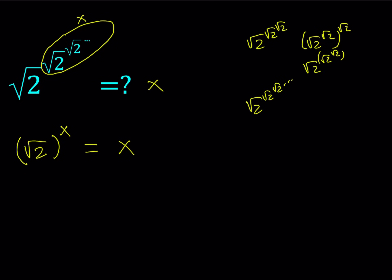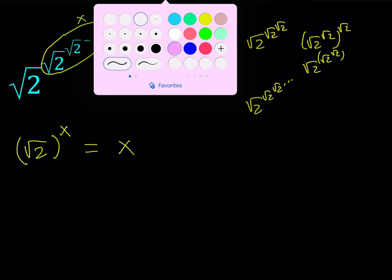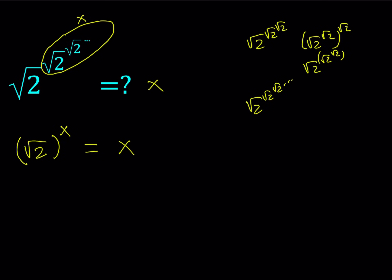Well, it's not that simple because x is in the exponent as well as in the result, so this is not a standard type of equation. One thing you can do is make a graph and see where the two sides meet. But let's try to guess our way — guessing and checking is a valid problem-solving strategy. If square root of 2 to the power x equals x, then x can be 2, because square root of 2 squared equals 2. So 2 works.